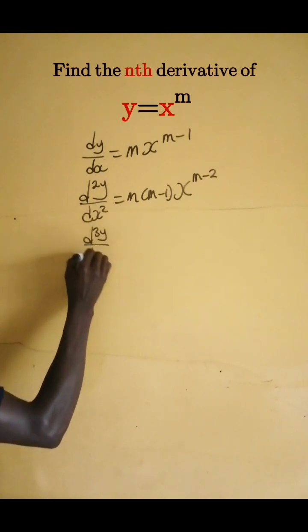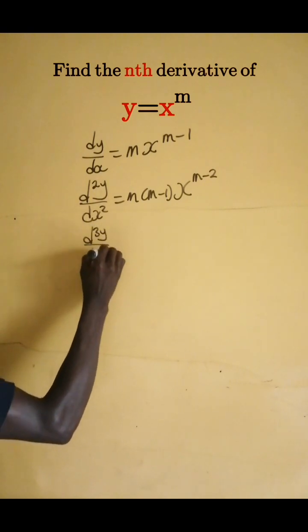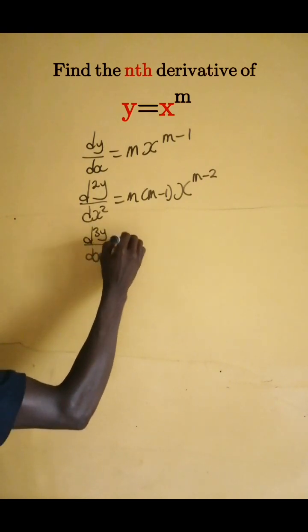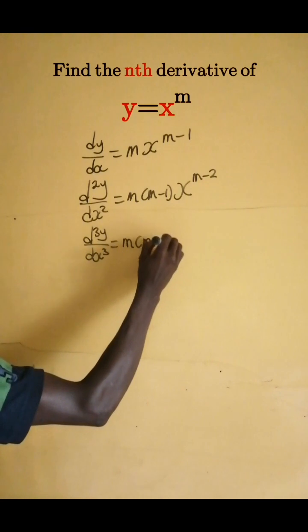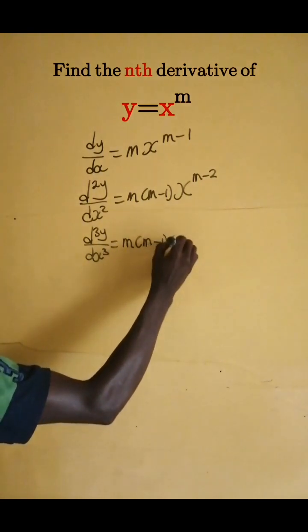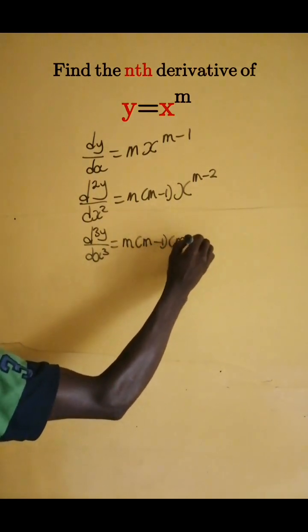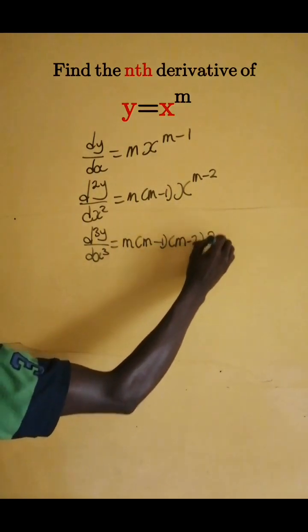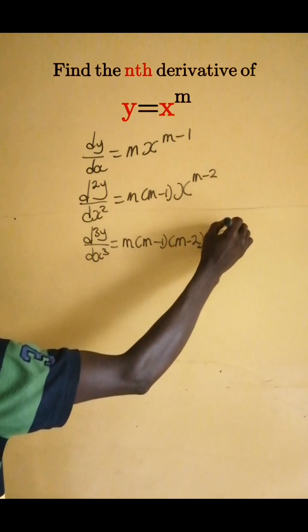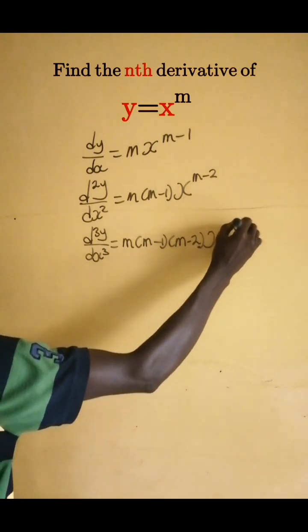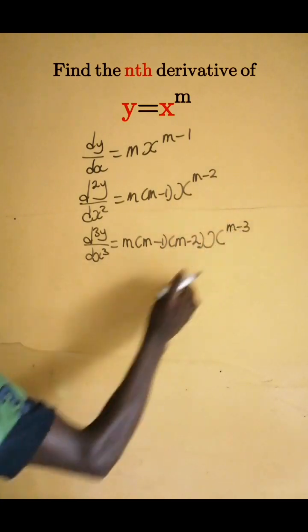The third derivative: d³y/dx³ equals m times (m minus 1) times (m minus 2) times x to the power m minus 3.